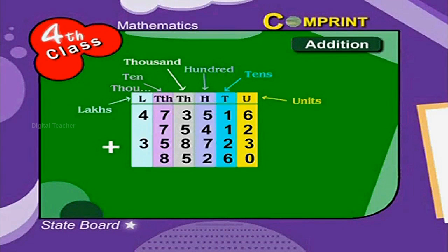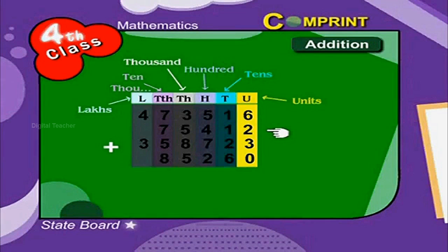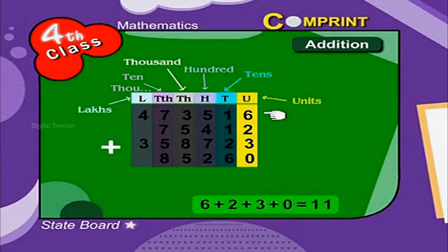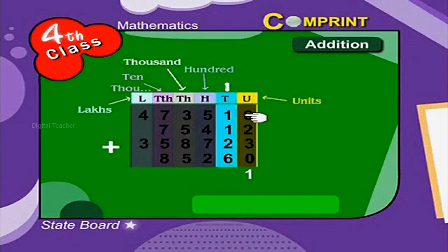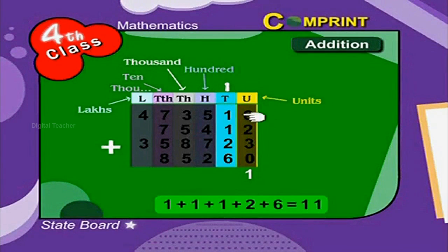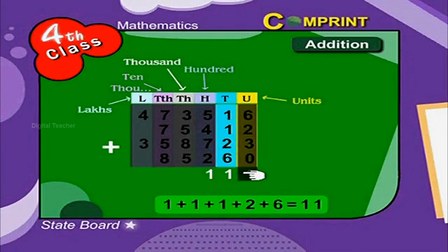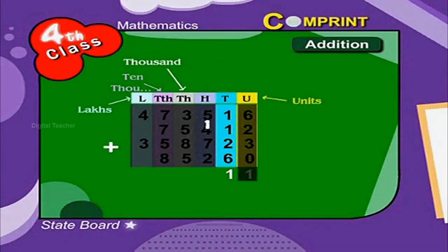Let us add the units place first. 6 plus 2 plus 3 plus 0 is equal to 11. Let us carry the digit 1 to the tens place. Now let us add the digits of the tens place. 1 plus 1 plus 1 plus 2 plus 6 is equal to 11. Let us carry the digit 1 to the hundreds place.